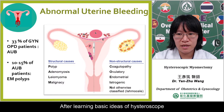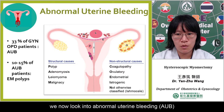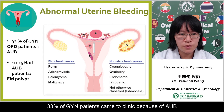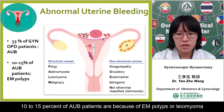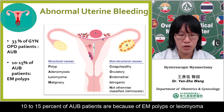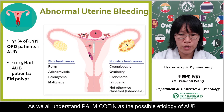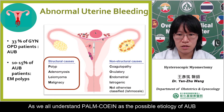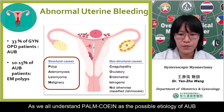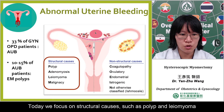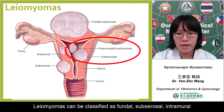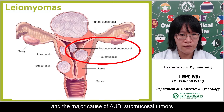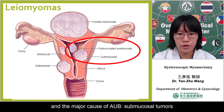After learning the basic ideas of hysteroscopy, we now look into abnormal uterine bleeding. 33% of gynecology patients present because of abnormal uterine bleeding; 10-15% of AUB patients are because of endometrial polyps or leiomyoma. Understanding PALM-COEIN as the possible etiology of abnormal uterine bleeding, today we focus on structural causes such as polyp and leiomyoma. Leiomyomas can be classified as fundal, subserosal, intramural, and the major cause of abnormal uterine bleeding — submucosal tumors.